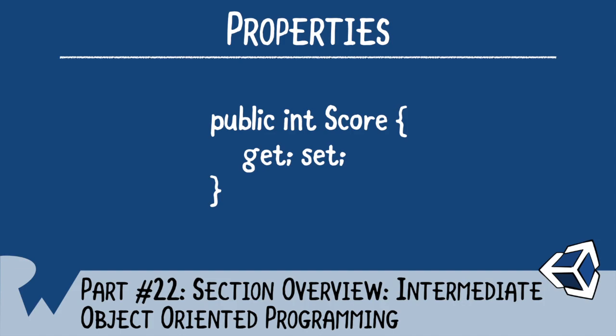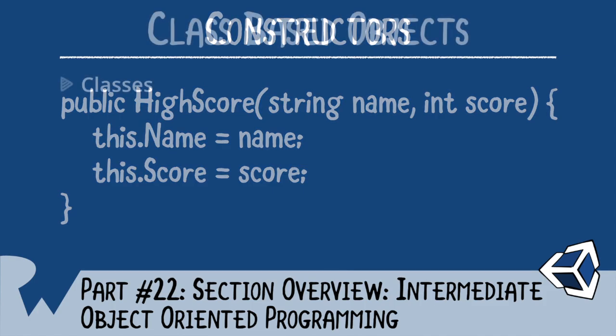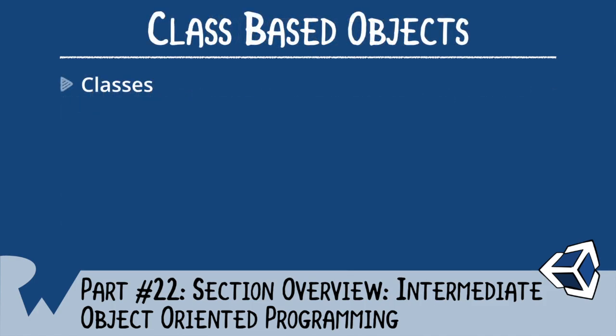Finally, you learned about constructors that enable you to both create and initialize your objects at once. They also provide opportunities to assign default values to other fields. That was the beginning of object-oriented programming and now we are moving into intermediate object-oriented programming, where you'll learn about the class object and some more abstract concepts.